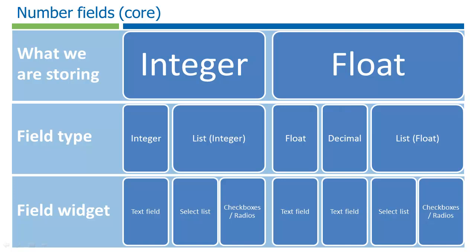Use the integer type for freeform input of whole numbers, such as the quantity of an item you might want to order, or an account number. Use the list variant when you want to limit the values to a predetermined list, such as the expiration month and year for a credit card.